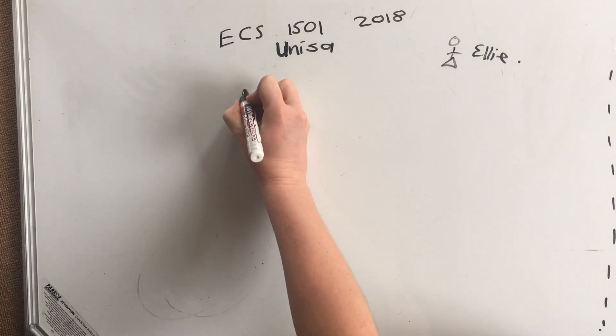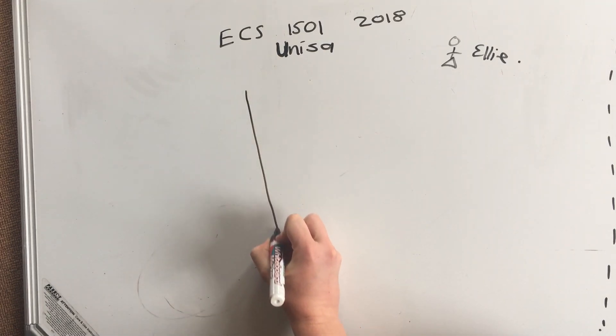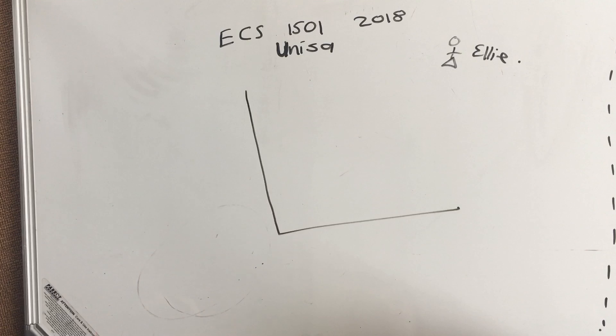So what I want to start with is how to draw a graph. It's quite important for economics, so let's discuss it. Here's the horizontal line, there's a zero, and there's the vertical line.